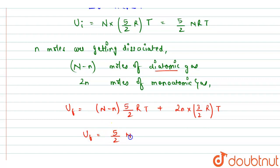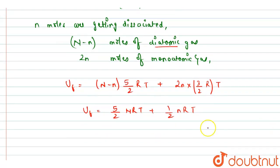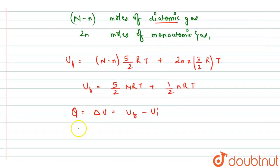And on solving this, we will get the final internal energy equals to 5/2 NRT plus 1/2 nRT.